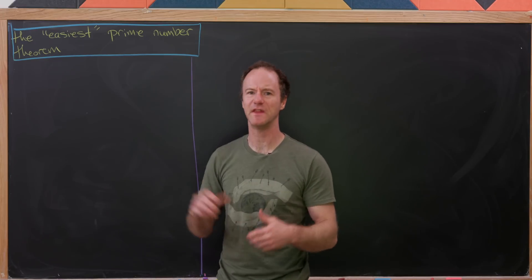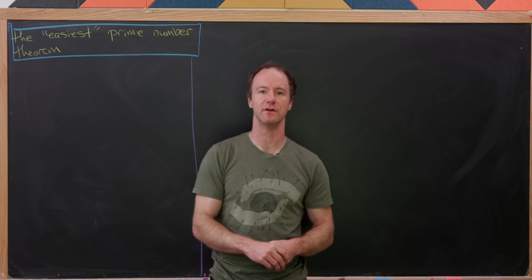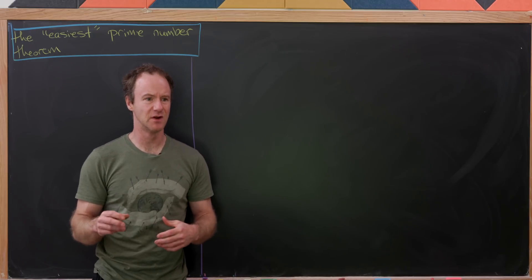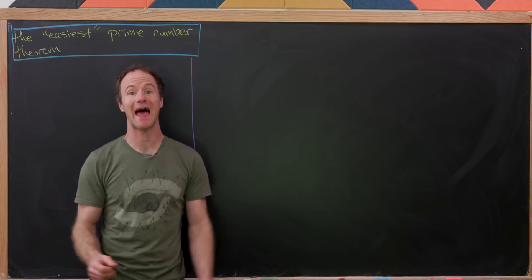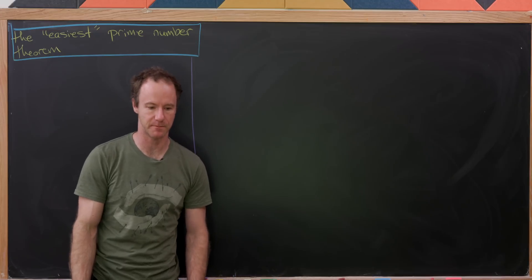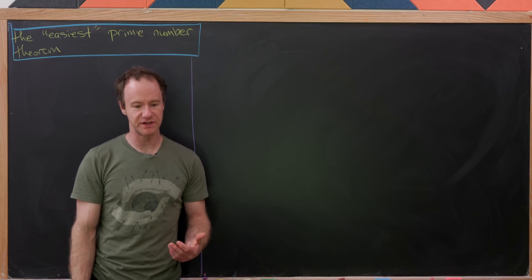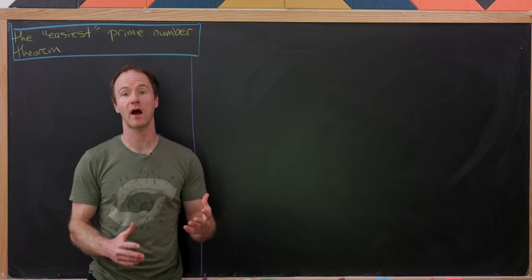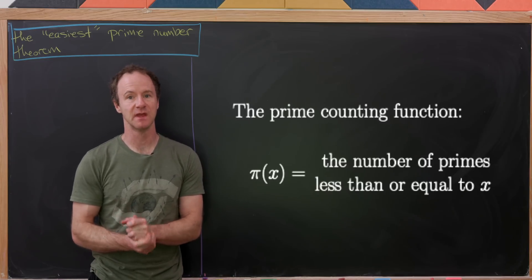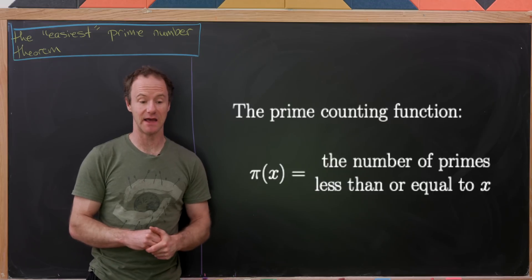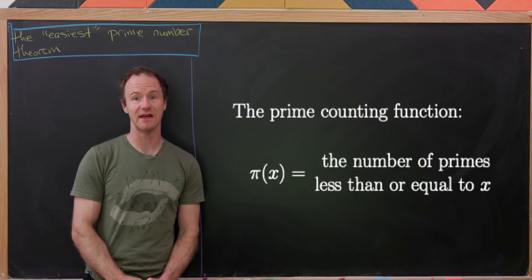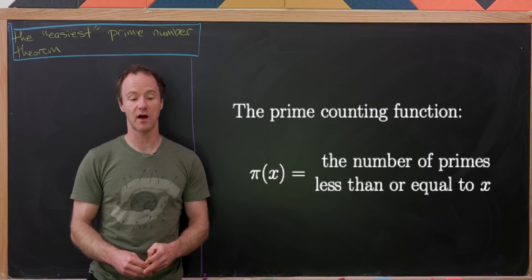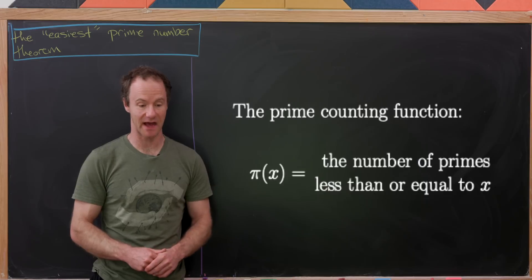Today we're going to prove something that I'm going to call the easiest prime number theorem. But before we do that, I'd like to recall some results that are closer to the actual prime number theorem. In order to do that, we need a certain function called the prime counting function, denoted by π. It's defined so that π(x) for some real number x is the number of primes less than or equal to x.